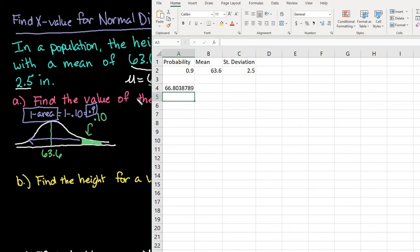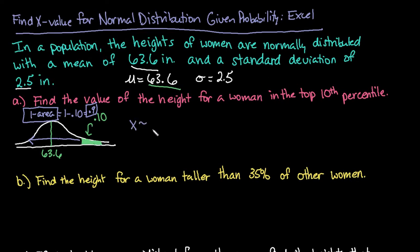So you would just round to however many decimal places that it tells you to. I'm just going to round to one decimal place. And so I can see that x is approximately 66.8. And so this would be the height. So a woman who is 66.8 inches would be in the top 10th percentile for this population.